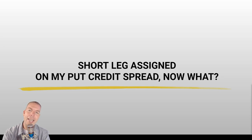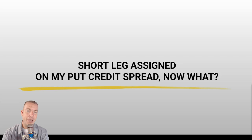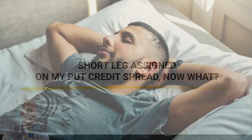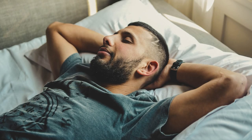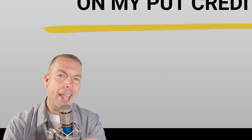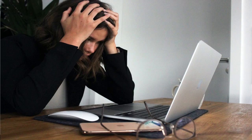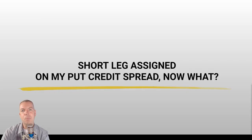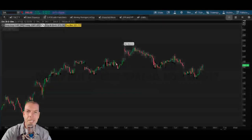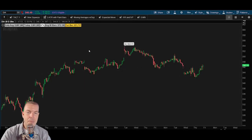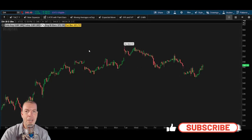Today we're talking about your short leg being assigned as part of your put credit spread. So maybe last night you received a nice little email from your broker that said hey, you've been assigned on your short put out of your put credit spread. Now what? So let's say three weeks prior we decided to come in here onto the index on the diamonds and we decided to put on a little put credit spread.